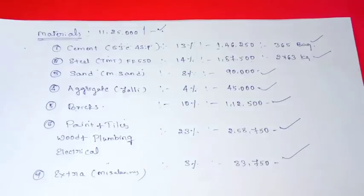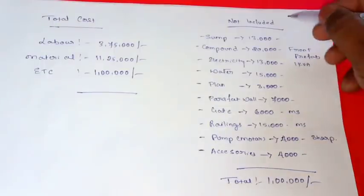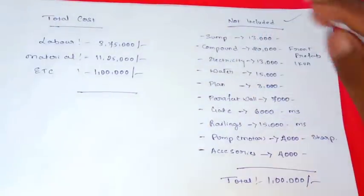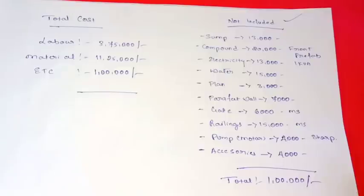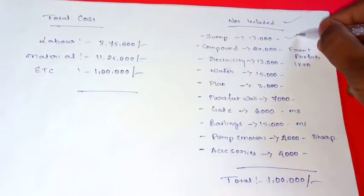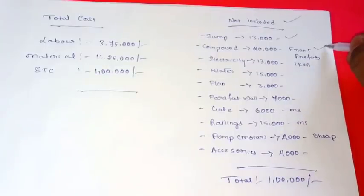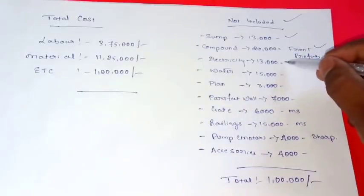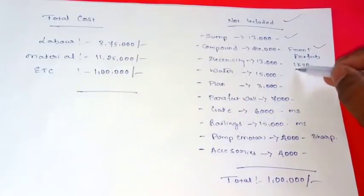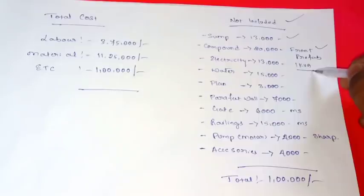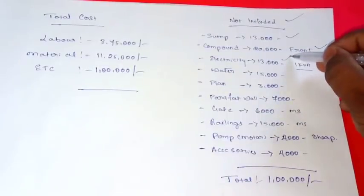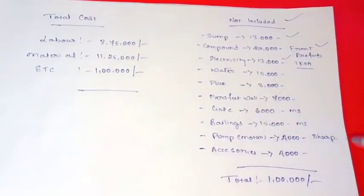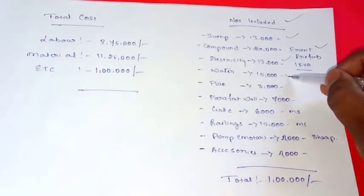First, this is a screenshot. This is not included in the cost. This is 13,000 for plan approval. This includes electricity charges. I used 15,000.